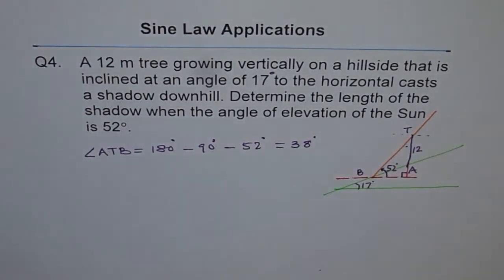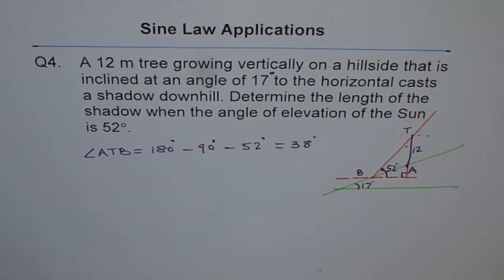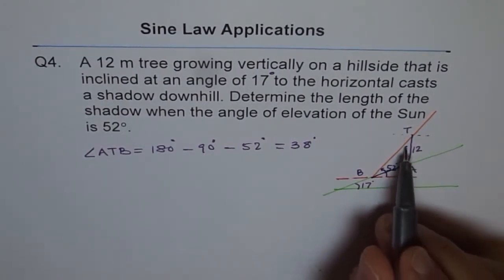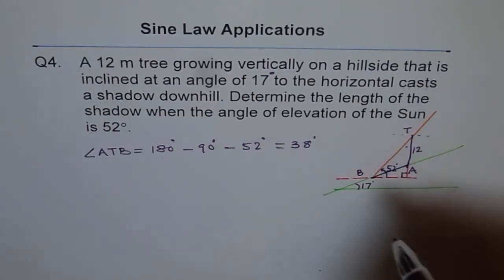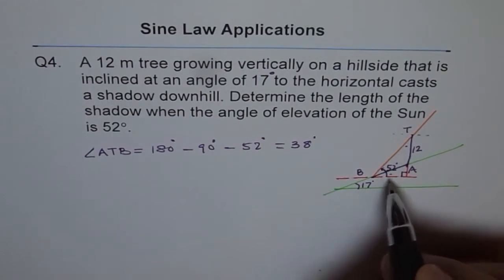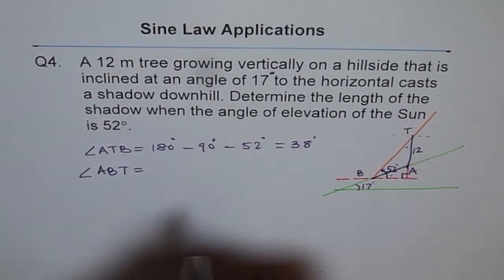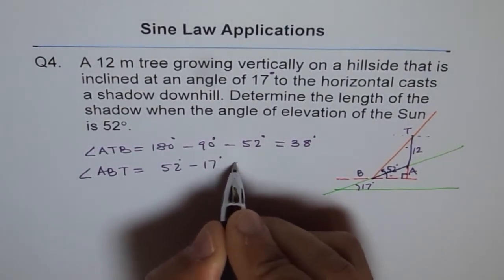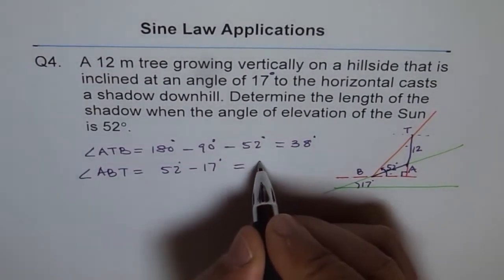So we know this angle in our triangle, and we know the height. The triangle we are working with is along the inclined plane — triangle BAT. We used the diagram to find that angle, but truly we are solving triangle BAT. The angle ABT should be 52 minus 17, where 17 is the inclined angle, so angle ABT equals 52 degrees minus 17 degrees, which equals 35 degrees.